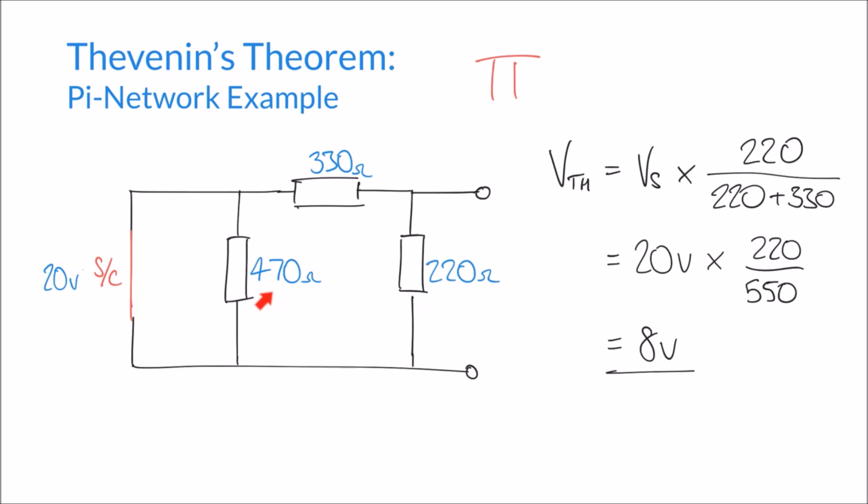It doesn't factor into our equations at all. And so simply, we're left with the resistance between A and B, or between the terminals, as 220 in parallel with 330.